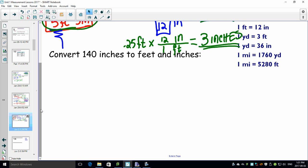Convert 140 inches into feet and inches. So let's start. 140 here. 140 inches into feet. So we want feet on top. We want to divide out the inches on the bottom. I know 1 foot is 12 inches. Boom, boom. That's gone. It's going to give me 140 divided by 12.